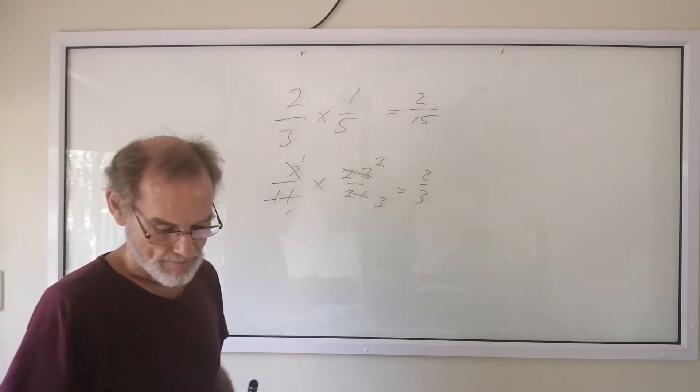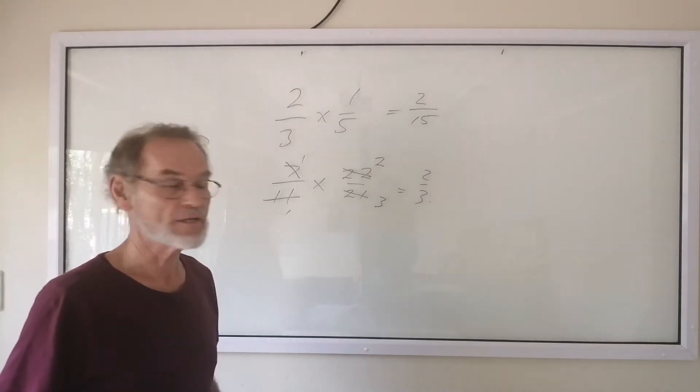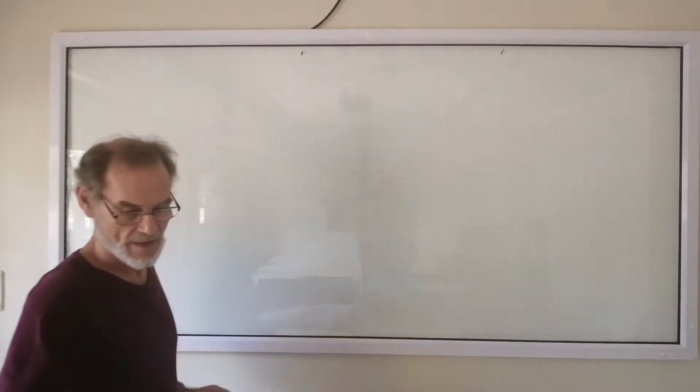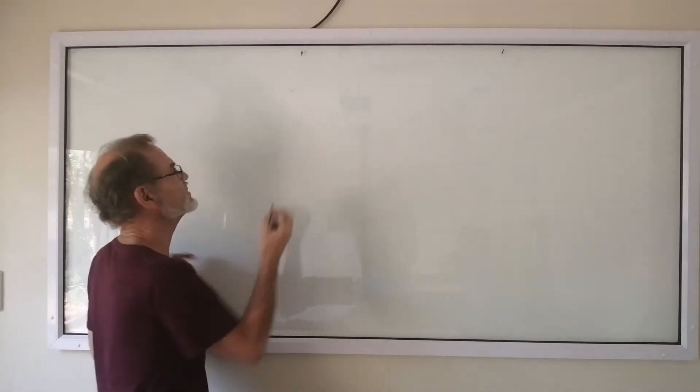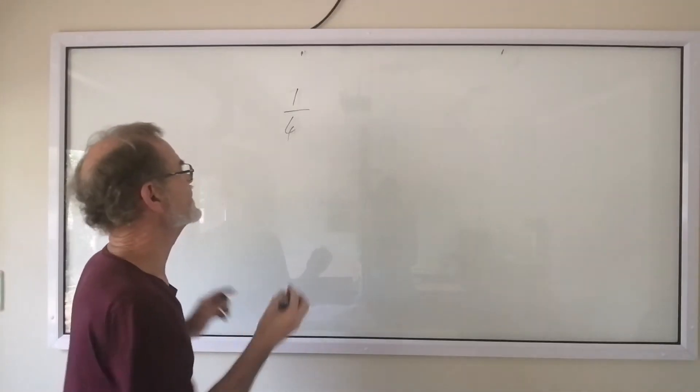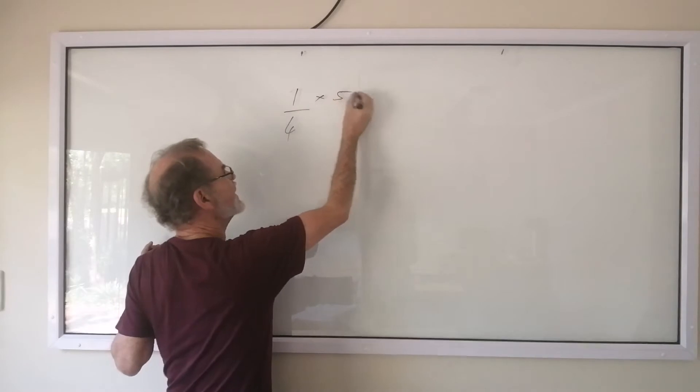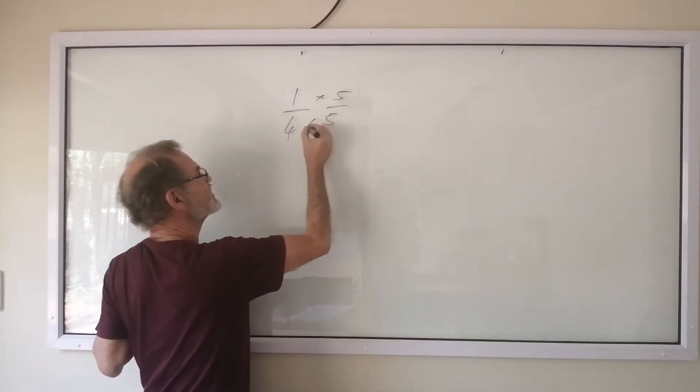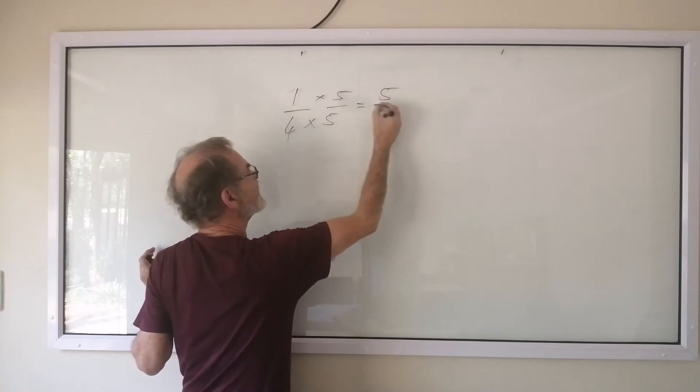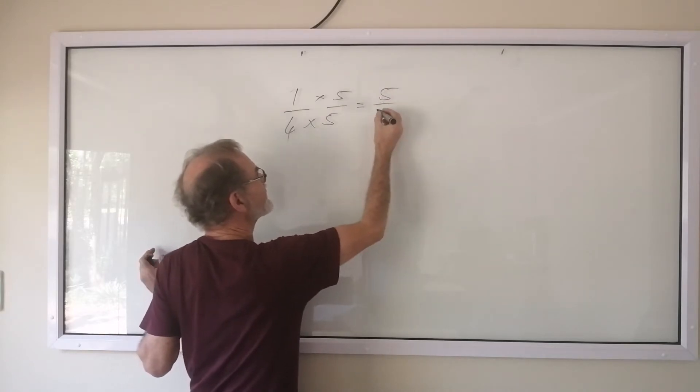Now, the next thing that we're going to do is form equivalent fractions. How do we form equivalent fractions? Well, one way is by multiplication. We can take, for instance, a quarter. And we can multiply this by any number. As long as the top and the bottom are the same, we will get an equivalent fraction. 5 times 1 is 5. 5 times 4 is 20.